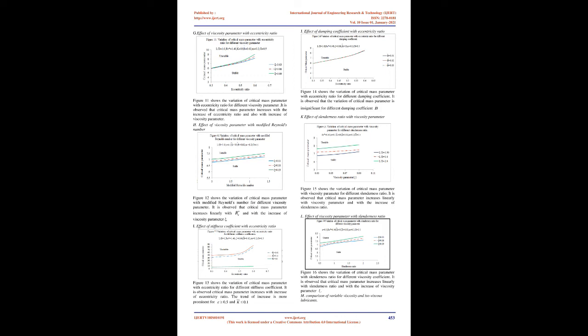Figure 10 shows the variation of critical mass parameter with modified Reynolds number for different slenderness ratios. It is observed that critical mass parameter remains almost constant, although a slight increase is noticed. Figure 11 shows the variation of critical mass parameter with eccentricity ratio for different viscosity parameters. It is observed that critical mass parameter increases with the increase of eccentricity ratio and also with increase of viscosity parameter.